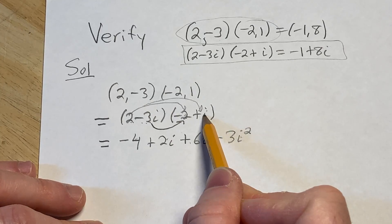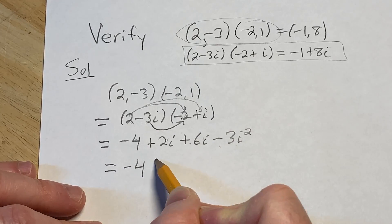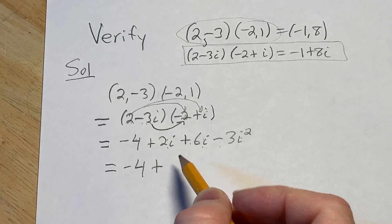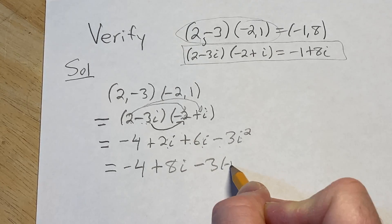Negative 3i times i is negative 3i squared. So this is equal to negative 4 plus 2i plus 6i is 8i, and here we have minus 3, then i squared is negative 1.